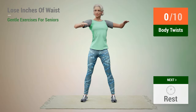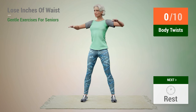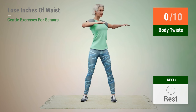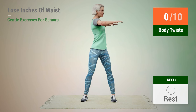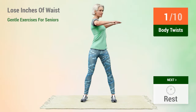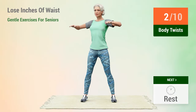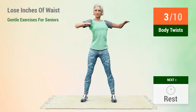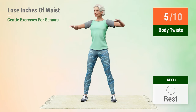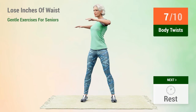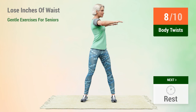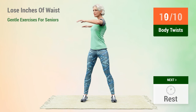Next exercise: body twists. In 5, 4, 3, 2, 1, go. 1, 2, 3, 4, 5, 6, 7, 8, 9, 10.